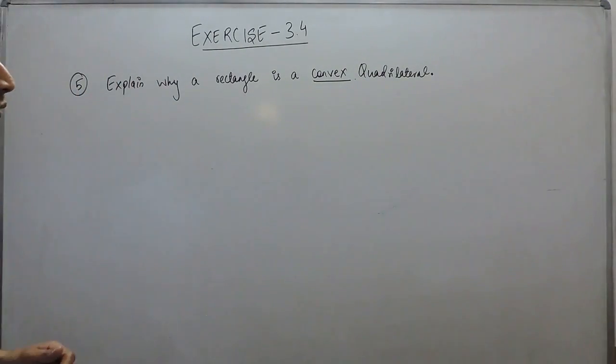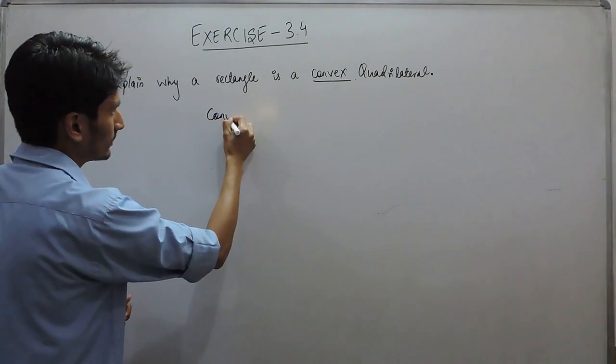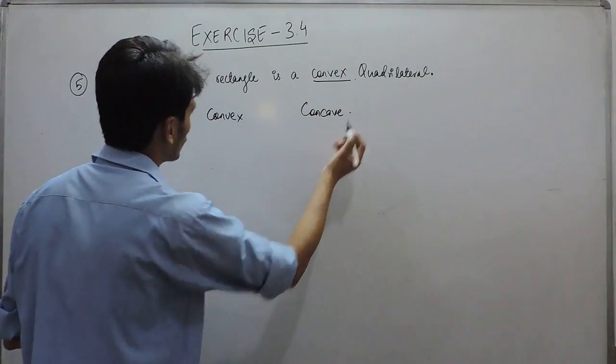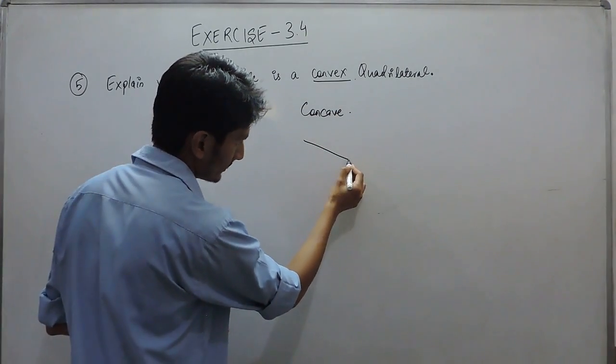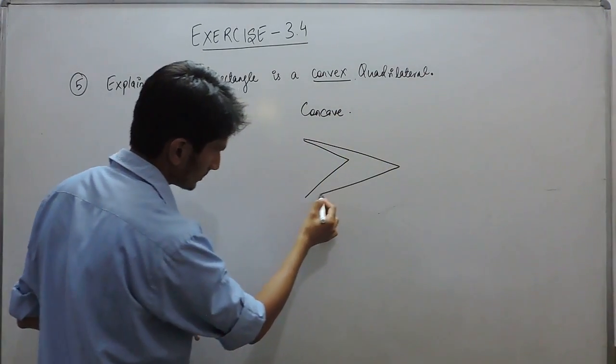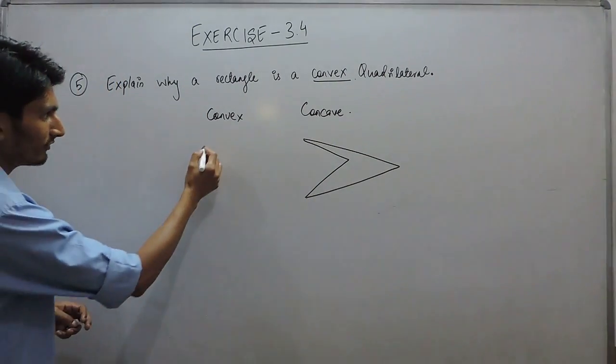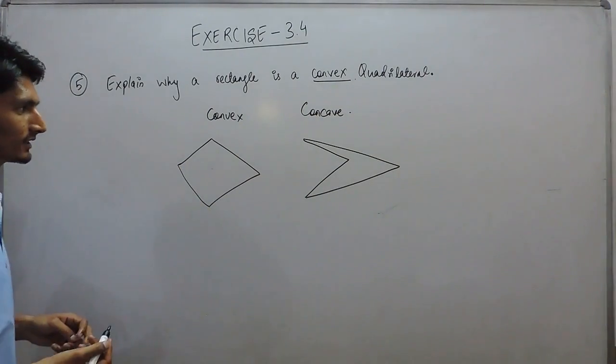First, let's define what is a convex quadrilateral and what is a concave quadrilateral, or convex polygon and concave polygon. A concave polygon is a polygon which looks like this, and a convex polygon is a polygon which looks like this.